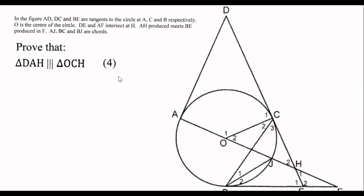Here's our first question for the evening. They've told us that AD, DC, and BE are tangents. So this line, this line, and this line are tangents to the circle.